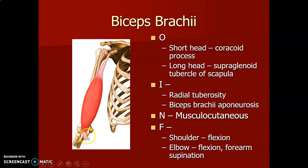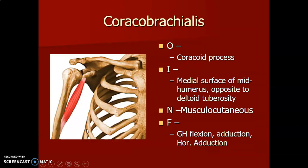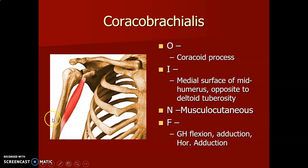Coracobrachialis originates from the coracoid process and inserts on the medial surface of the mid-shaft of the humerus, opposite the deltoid tuberosity. It is innervated by the musculocutaneous nerve and causes glenohumeral joint flexion and adduction.